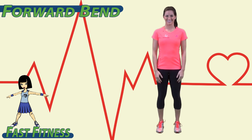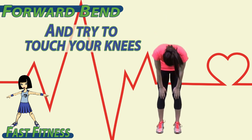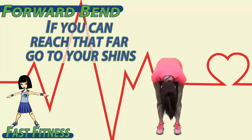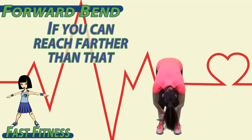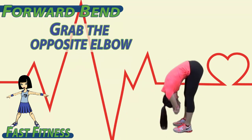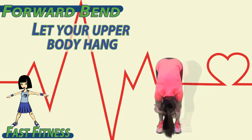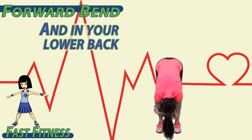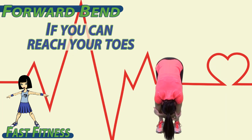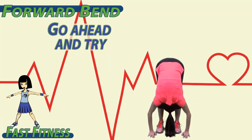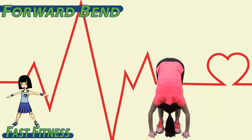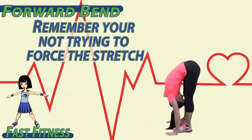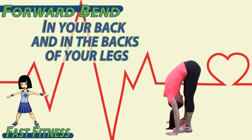To begin, lean forward and try to touch your knees. If you can reach that far, go to your shins. If you can reach farther than that, grab the opposite elbow. Let your upper body hang. Feel the stretch in the back of your legs and in your lower back. If you can reach your toes or even the ground, go ahead and try. Remember, you're not trying to force the stretch — you just want to feel the stretch in your back and in the backs of your legs.